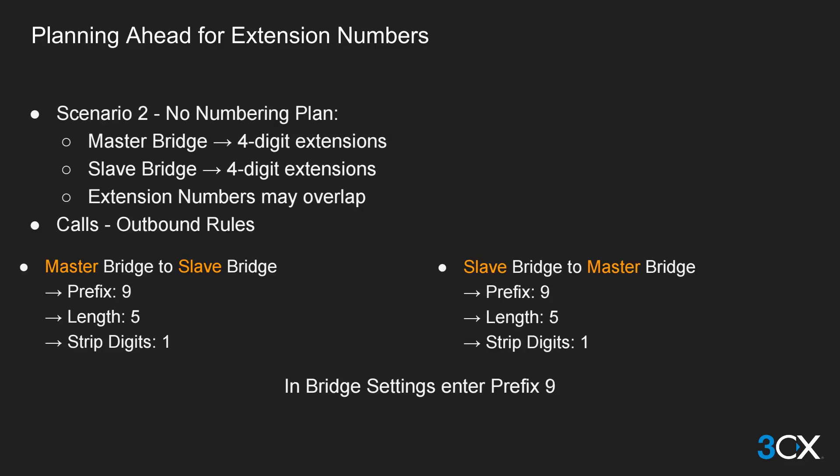If both PBXs have the same extension range — for example both in the 1000 range — the outbound rules will be similar. A prefix would be required in this case, for example 9, though any number can be used. A digit length of 5 would be required since the prefix counts as a digit. You will need to strip this prefix so the remote PBX does not receive it as part of an extension number. In the outbound rule prefix of the bridge settings, a 9 would be required to show remote PBX extensions with the prefix to differentiate them from local extensions.